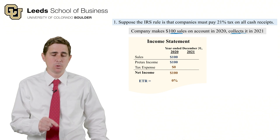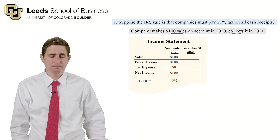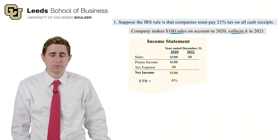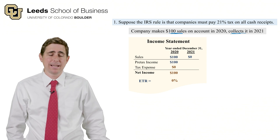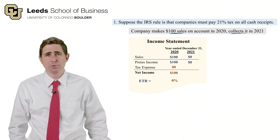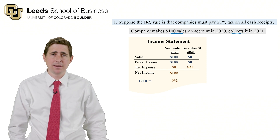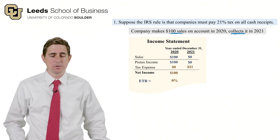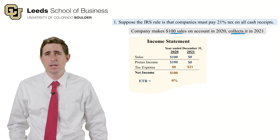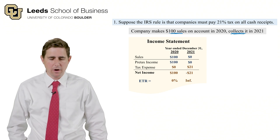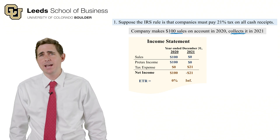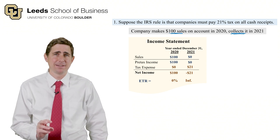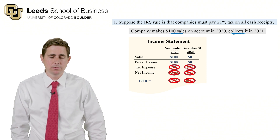In 2021, investors would observe no revenue — the revenue was earned last year — so pre-tax income is zero. But suddenly the company has to pay 21% tax because it's collecting the $100 in cash. Investors would observe $21 of tax expense with zero income and ask: how come you have an infinite effective tax rate? That would confuse investors — so we don't do that.